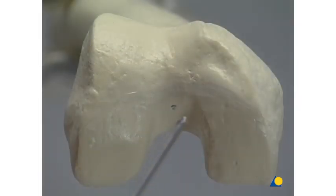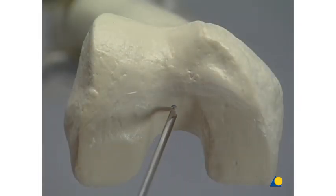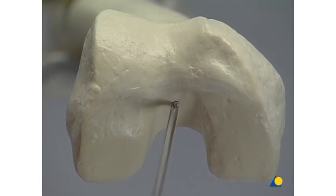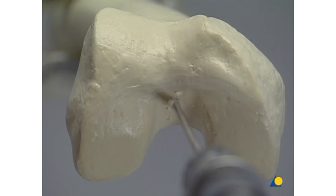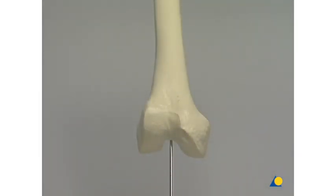The guide wire is inserted 10 to 15 cm into the medullary canal in the AP direction and in the sagittal projection along the axis of the femoral shaft. In doing so, the 7 to 9 degree valgus angle of the axis of the femur must be considered.